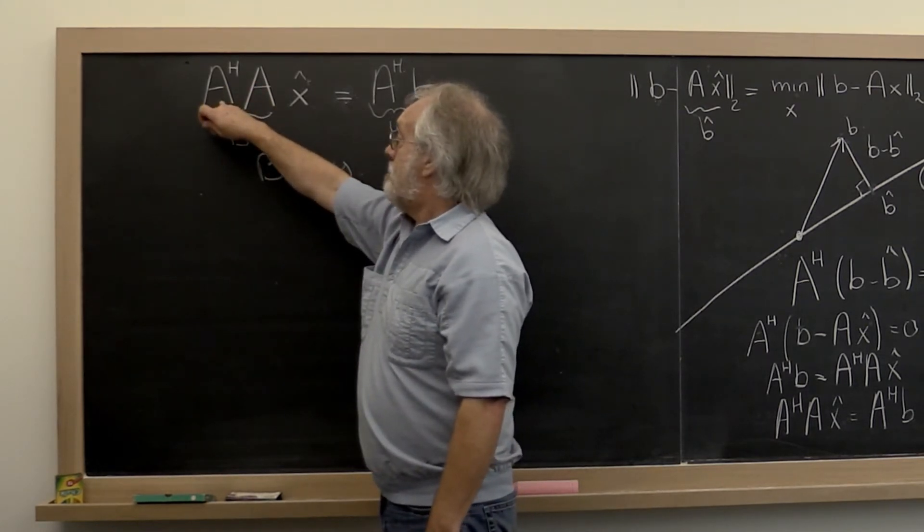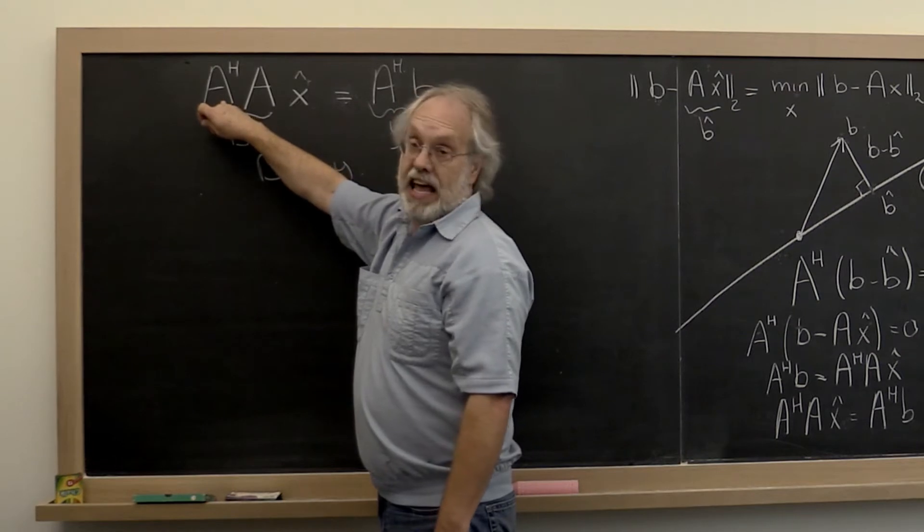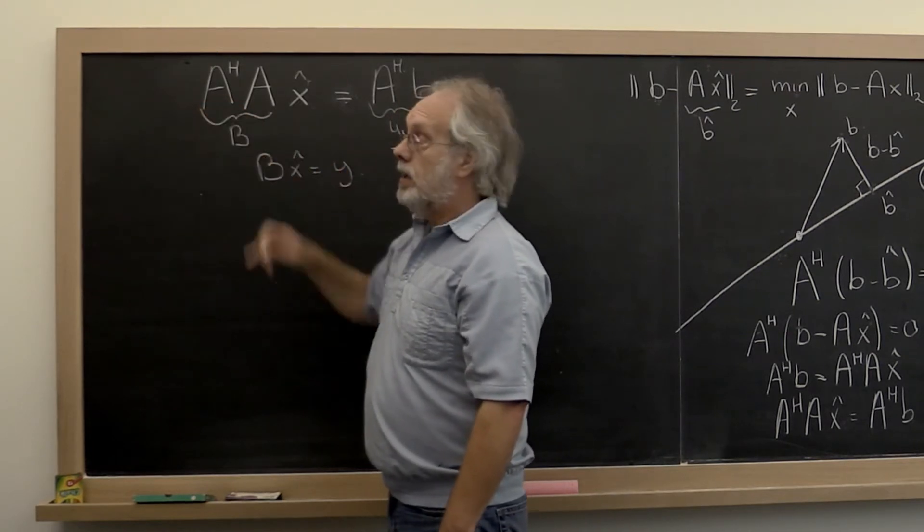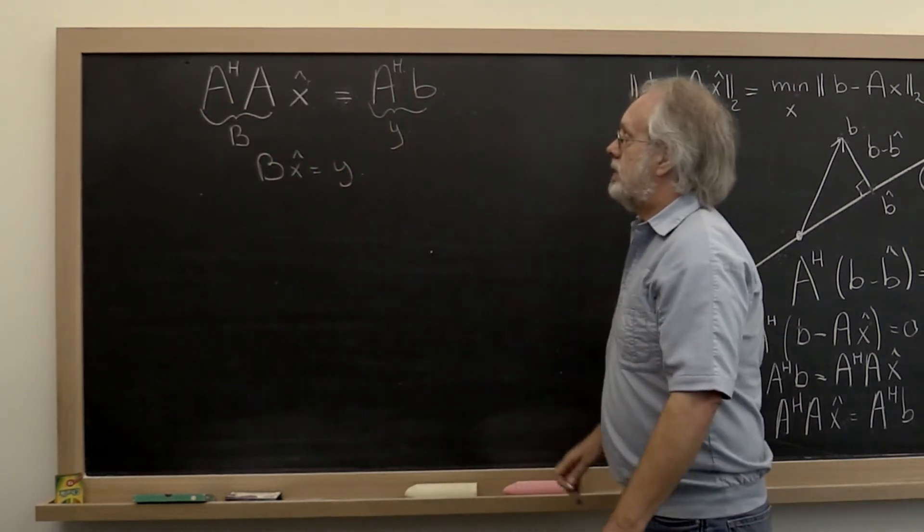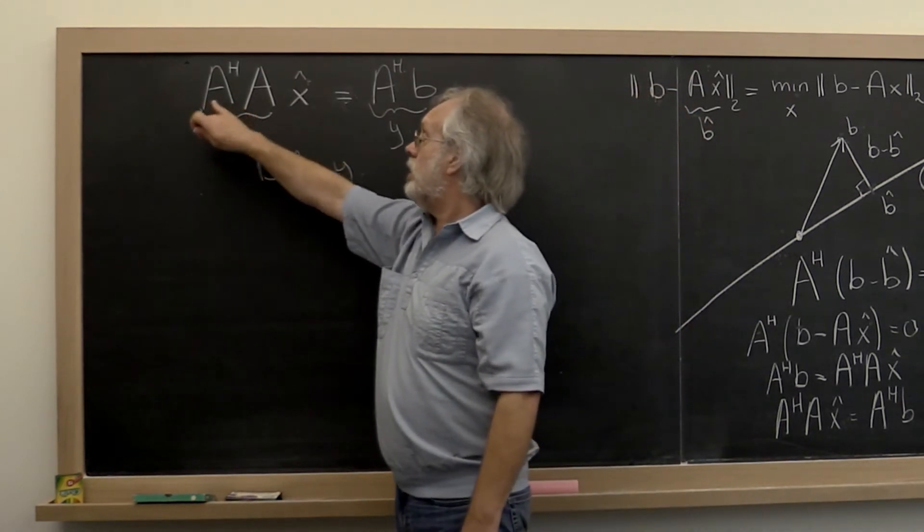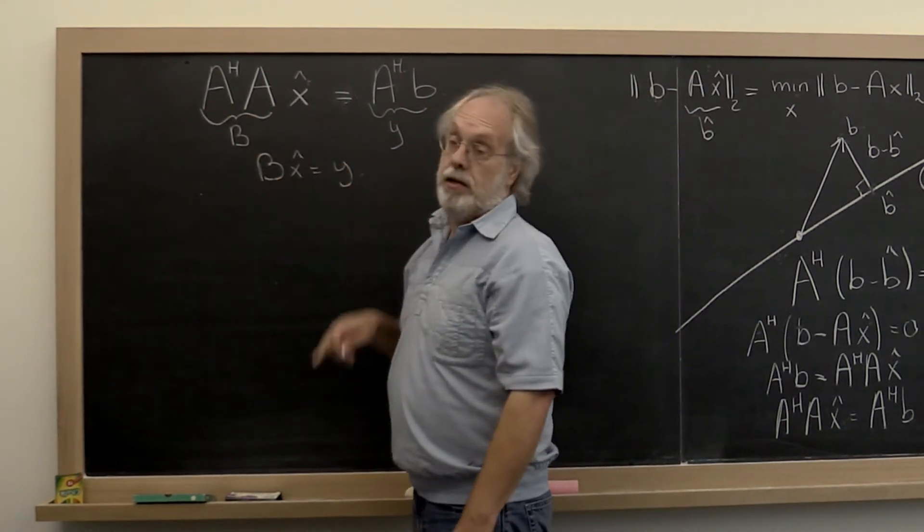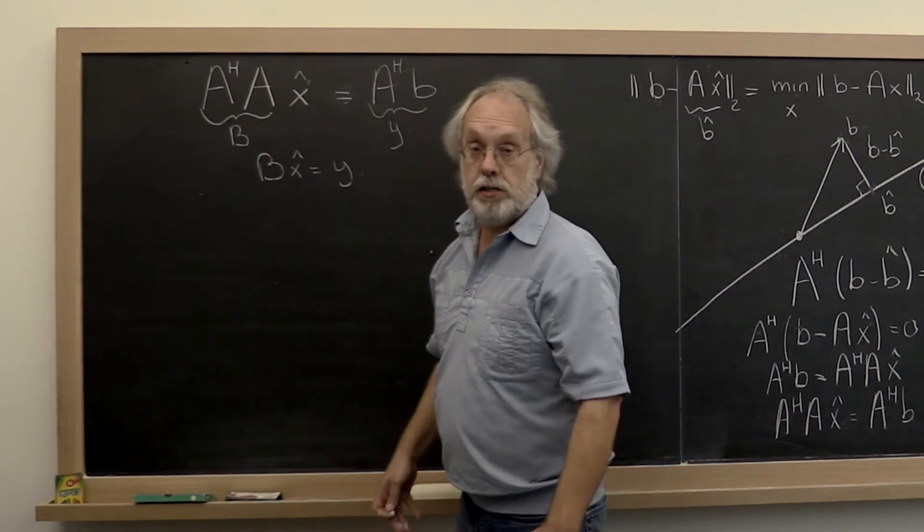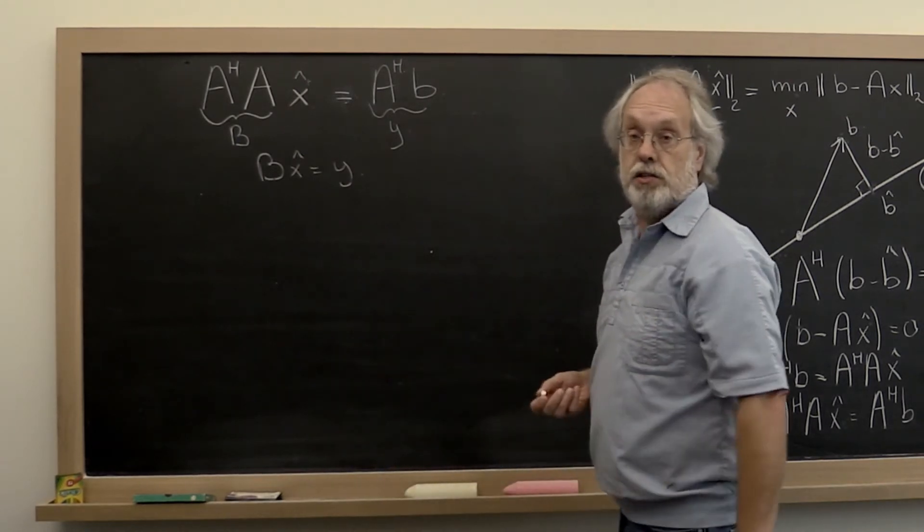If A is M by N, then this matrix is N by N. And we already commented on the fact that if A has linearly independent columns, then B is a non-singular matrix. And therefore we know that this has a unique solution.